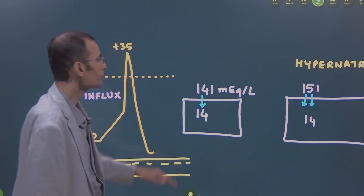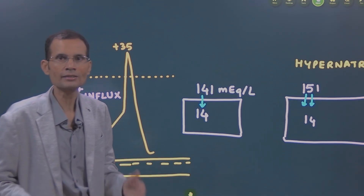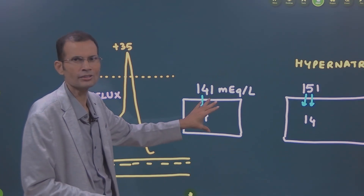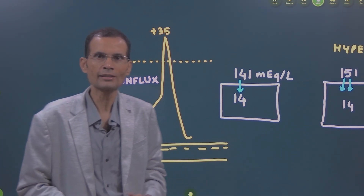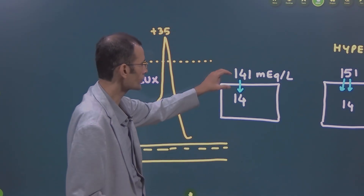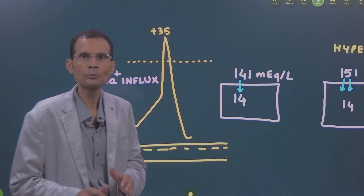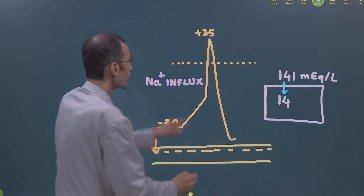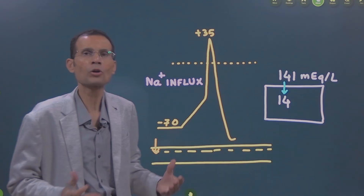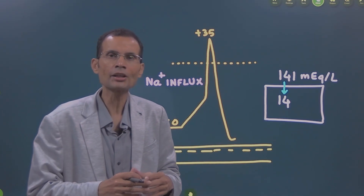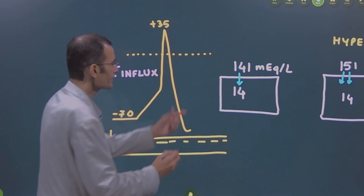Normally, the sodium concentrations are 141 on the outside and 14 on the inside, in the case of a nerve. This is just a diagrammatic representation. Sodium is coming in and causing depolarization, and it is coming in because of the concentration gradient — 141 to 14. This gradient is causing the sodium to come in, and even at threshold, there is a certain concentration gradient which causes a massive entry of sodium and a spike is generated. But this is one set of conditions.